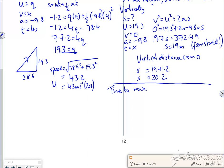So using that equation, V equals U plus AT, that's the easiest, so nothing is 19.3 minus 9.8T, so 9.8T is 19.3, so T is 1.97 seconds.